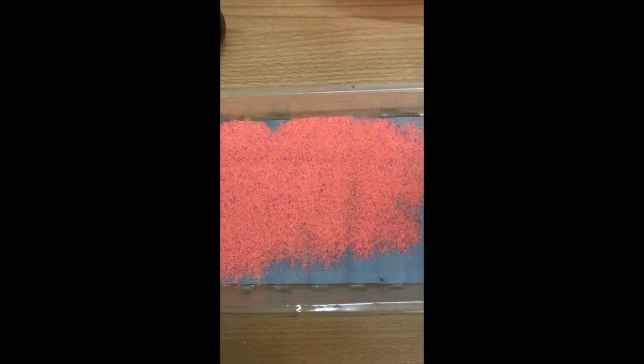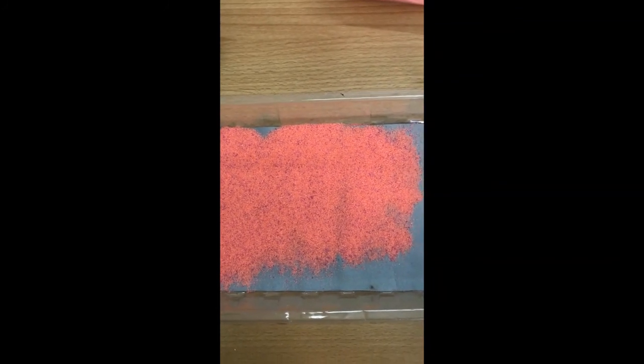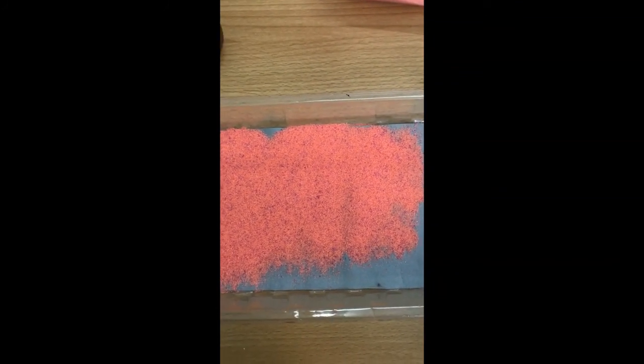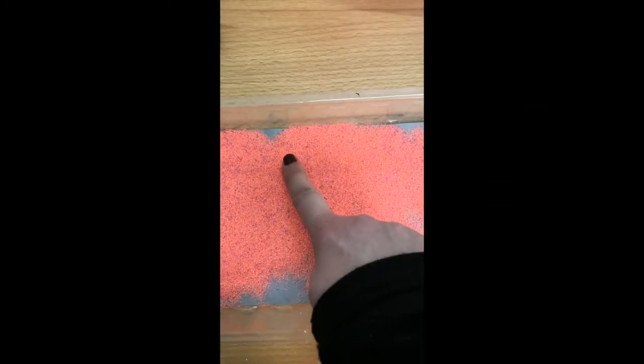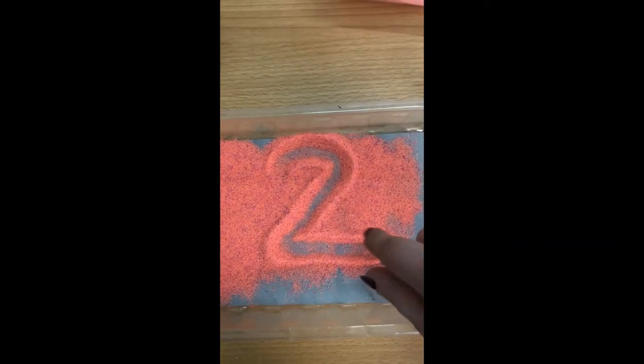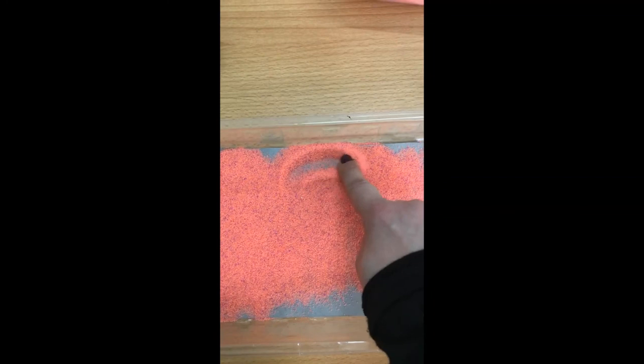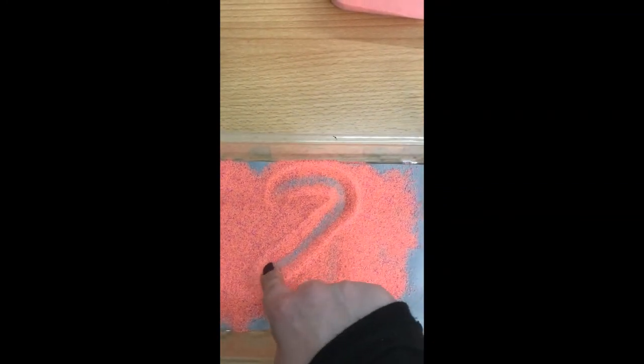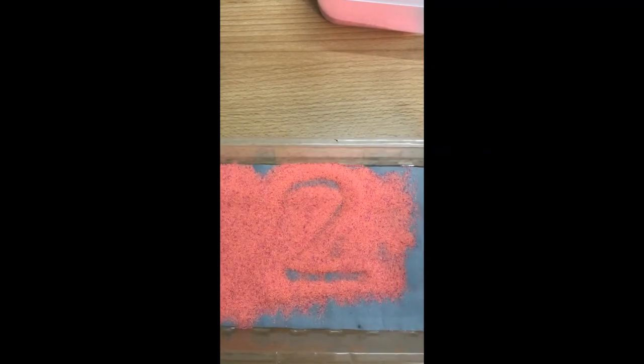We are going to write number two in my sand tray. You can use salt or flour in a tray to trace number two. Okay. Round. Slide. Across. This is how we write number two. One more time. Round. Slide. Across. Well done. Try it out.